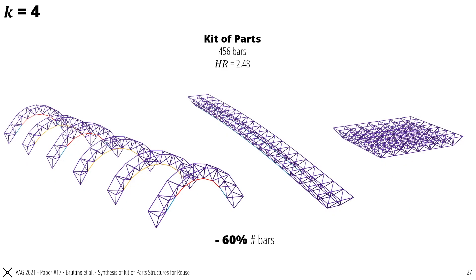This slide shows the geometry of the three structures when we aim to build them with only four different bar lengths. Here the geometry optimization produces quite regular structures, with the trade-off that the proximity to the initial target geometry is not well preserved. Yet, this gives us a high homogenization rate of 2.48, which means that we only need 456 kit of parts bars to build the three structures that have 1132 members in total.